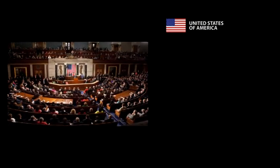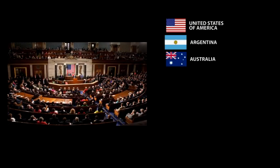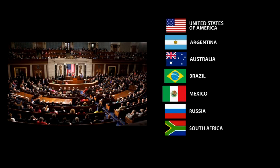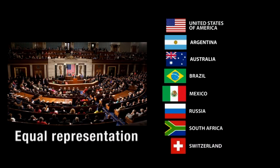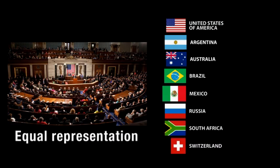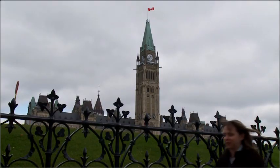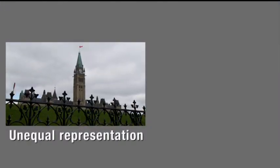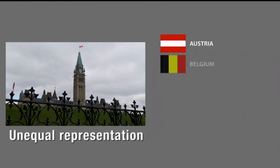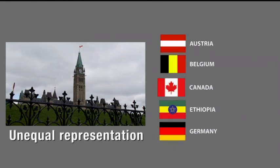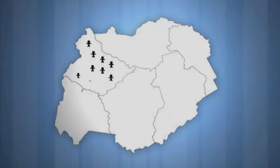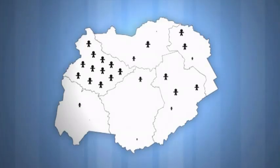Like the United States, Argentina, Australia, Brazil, Mexico, Russia, South Africa, and Switzerland also have equal representation in their upper houses. Some countries have unequal representation — Austria, Belgium, Canada, Ethiopia, and Germany are among these, where more populous units have more representatives than those with smaller populations.